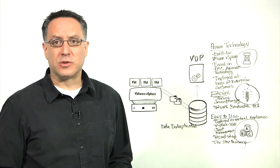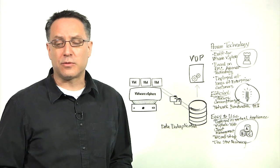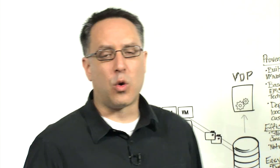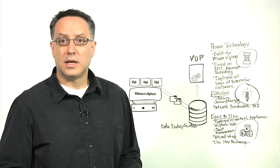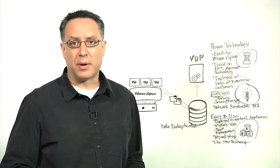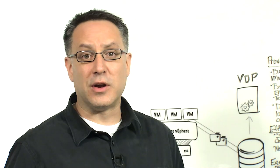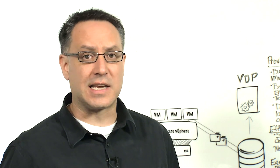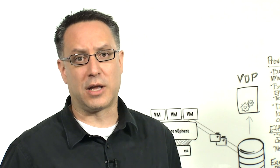vSphere data protection comes in two editions to fit the capacity and functionality requirements for customers of all sizes. The core vSphere data protection is included in vSphere Essentials Plus and above at no additional cost. It's ideally suited to protect small environments of about 100 virtual machines based on 2 terabytes of deduplicated data per virtual appliance. vSphere data protection advanced extends the capabilities of vSphere data protection by adding additional scalability and integration with mission-critical applications.